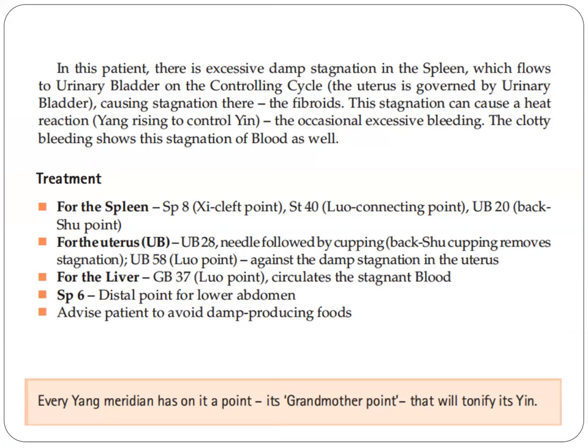This stagnation can cause a heat reaction — yang rising to control yin — and occasional excessive bleeding. The clotty bleeding shows the stagnation of blood as well. The treatment for the spleen: we use Spleen-8, the cleft point; Stomach-40, the luo connecting point; and UB-20, the back shu point. For the uterus, we use UB-28, needled followed by cupping. Back shu cupping removes stagnation. UB-31, UB-58 — the luo point — against damp stagnation in the uterus.